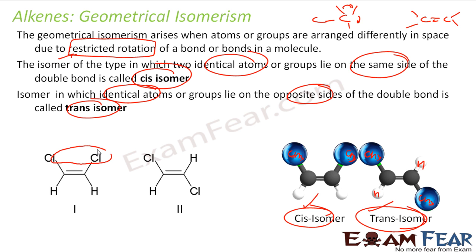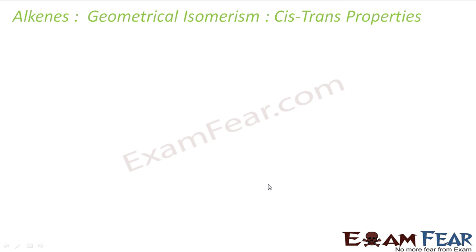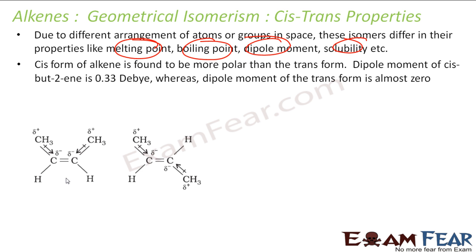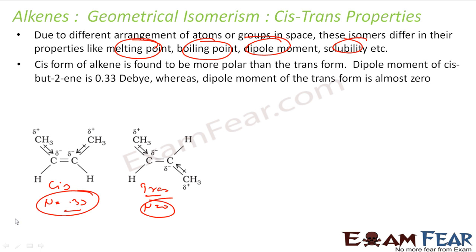For example, in 1,2-dichloroethene, if you see, this is cis — both chlorines and both hydrogens are on the same side. This is trans — both chlorines are on different sides. Cis and trans isomers have different physical and chemical properties. For bute-2-ene, the cis isomer has a dipole moment of 0.33, and for the trans isomer it is 0 because the dipole moments cancel. In the cis form they add up, giving a dipole moment, while in the trans form it is almost 0.